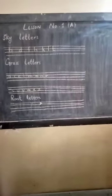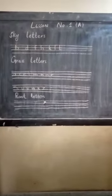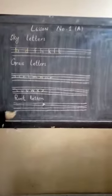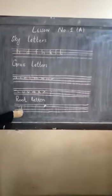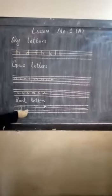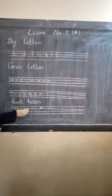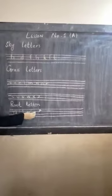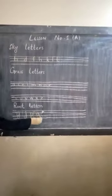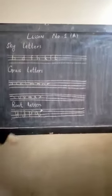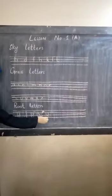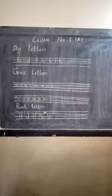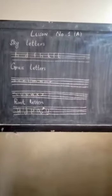The root letters are: G, J, P, Q, and Y. We have five root letters, which are written on the bottom three lines of your four lines.